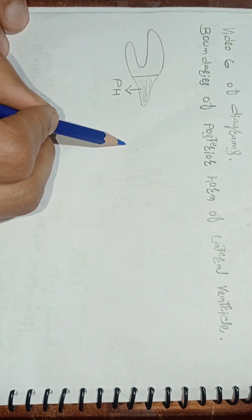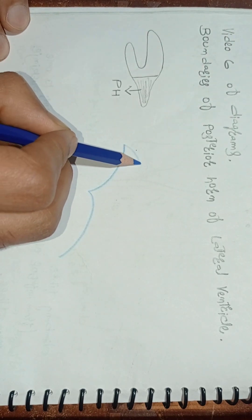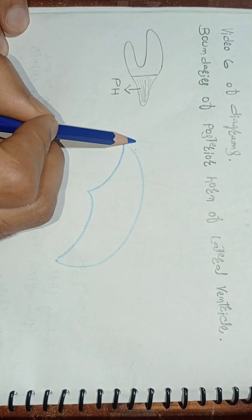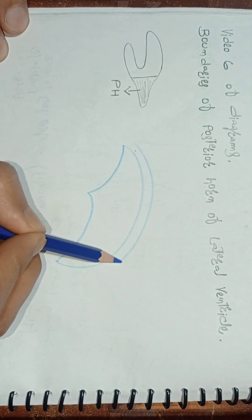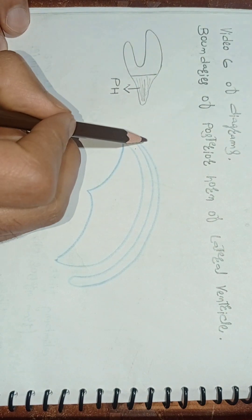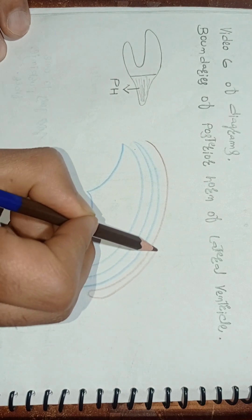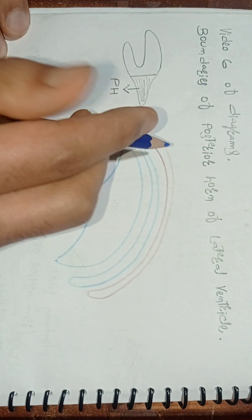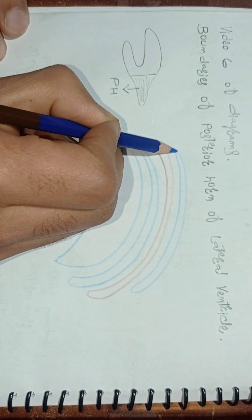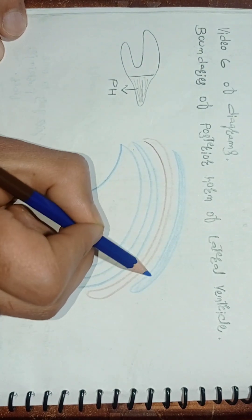First, we'll draw a line like this, then another line like this. We'll join the endpoints of these lines into a D-shape. Then we'll make a structure like this that will follow the D. Now we'll make another structure like this. We can also color these three structures.